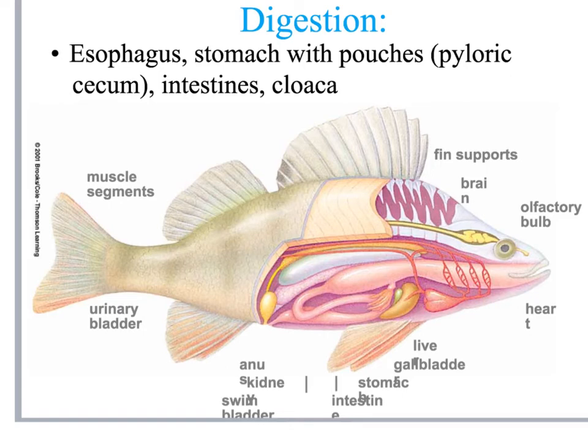The diagram is off a little bit, but what's important is understanding that as the fish eats, the food passes through its mouth, then to the esophagus, then to the stomach. The stomach has pouches called pyloric cecum, within which enzymes and other substances help digest the meal. Then it passes through the intestines and then the cloaca, and you also have the anus there.